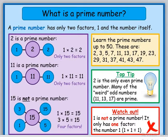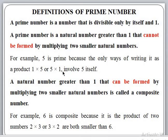We generally define a prime number as a number that is divisible by itself and 1 — in these two cases it produces remainder 0, and in all other cases it gives a non-zero remainder. Another way to define it: a prime number is a natural number greater than 1 that cannot be formed by multiplying two smaller natural numbers. Since 1 has only one factor, it is not a prime number.